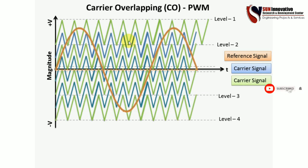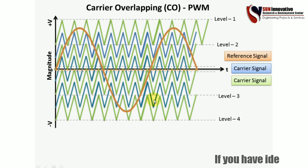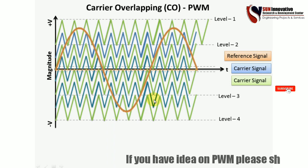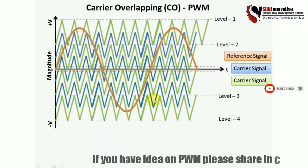Next is the carrier overlapping PWM technique. In this method, the carrier signals overlap with each other — meaning the mid-point amplitude of one carrier signal reaches the peak value of the next carrier signal. This overlapping of magnitudes across multiple signals is popular for multilevel inverter PWM generation. It has advantages particularly for selective harmonic elimination, such as removing the third or fifth harmonic from the inverter output.